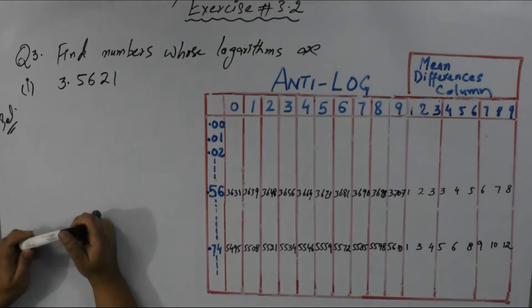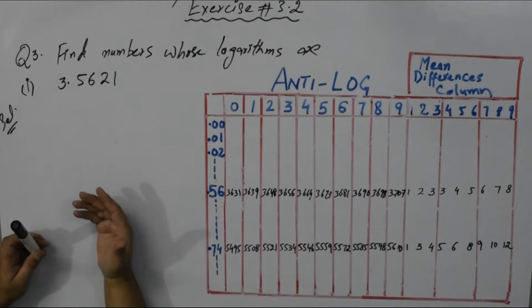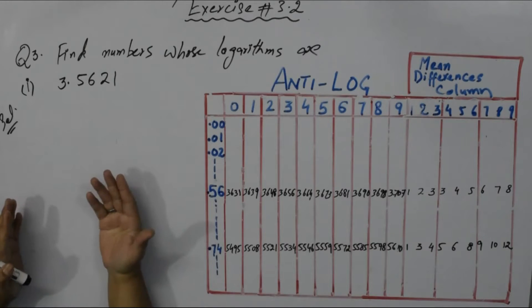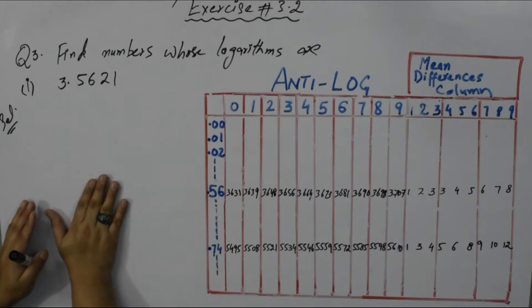Assalam alaikum students, today you will learn how to calculate anti-logarithm from log table. You know what is anti-logarithm? Anti-logarithm of any number is the inverse process of finding the logarithms of the same number.